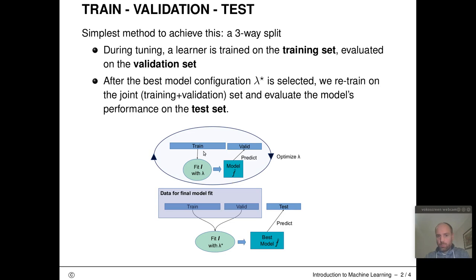what we will do is we will always train our learning algorithm on the training set with a specific configuration lambda. This training process will result in a model f hat. We will predict with this model on our validation set. That gives rise to a validation set performance. And this we will optimize with our tuning algorithm.